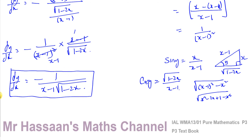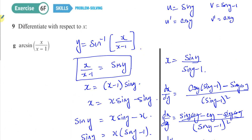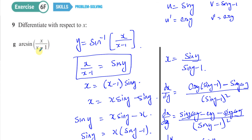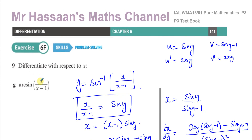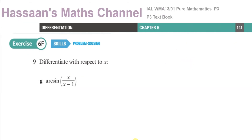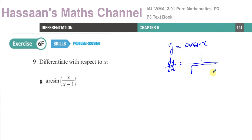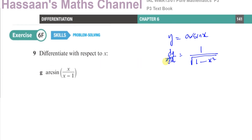It's a bit of a palaver, this question. I doubt you'll get something as complicated in the exam, but this is how you deal with such questions if you didn't know the result for the arc sine derivative. Now I'm going to show you how to do it using the known result: if y equals arc sine of x, then dy/dx equals 1 over the square root of (1 minus x squared).